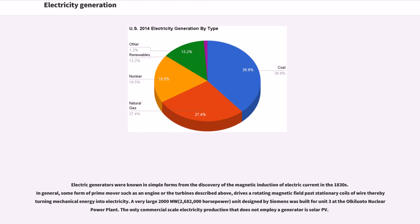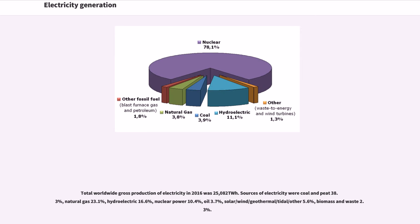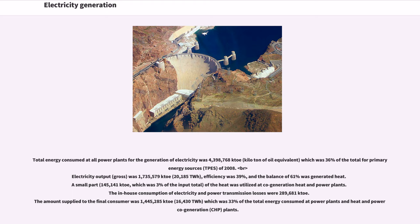Total worldwide gross production of electricity in 2016 was 25,082 TWh. Sources of electricity were: coal and peat 38.3%, natural gas 23.1%, hydroelectric 16.6%, nuclear power 10.4%, oil 3.7%, solar/wind/geothermal/tidal/other 5.6%, biomass and waste 2.3%. Total energy consumed at all power plants for the generation of electricity was 4,398,768 kilotons of oil equivalent, which was 36% of the total for primary energy sources. Electricity output gross was 1,735,579 kt (20,185 TWh), efficiency was 39%, and the balance of 61% was generated heat.